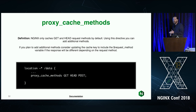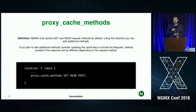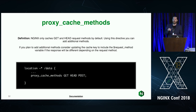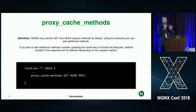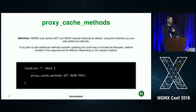You can also tell NGINX what HTTP methods to cache. By default it caches GET and HEAD requests — it actually converts HEAD to GET. So if you're testing at the command line with curl and you do a HEAD, it actually caches that. There might be situations where you want to cache a POST request — you just need to add the request method to the cache key, since GET and HEAD are technically the same with the default cache key.